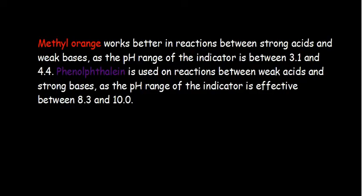Looking at our common indicators — methyl orange and phenolphthalein — methyl orange works better in reactions between strong acids and weak bases, with a pH range of 3.1 to 4.4. Phenolphthalein is used in reactions between weak acids and strong bases, as its pH range is effective between 8.3 and 10.